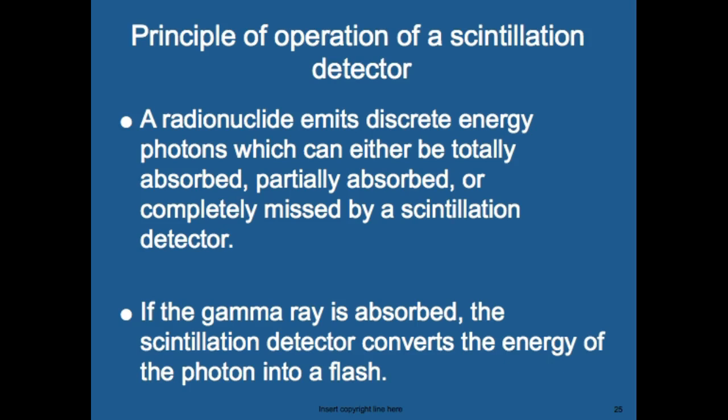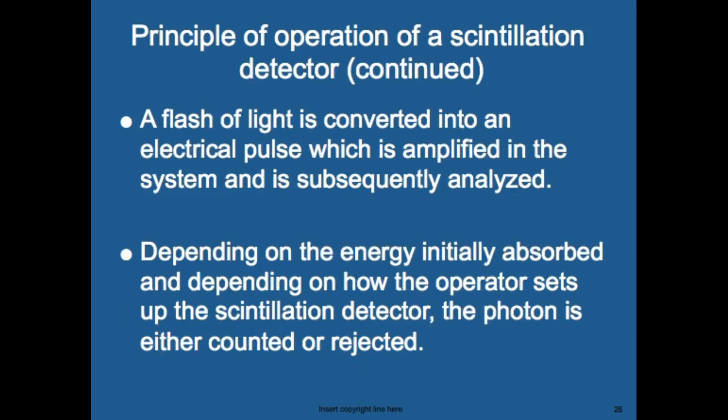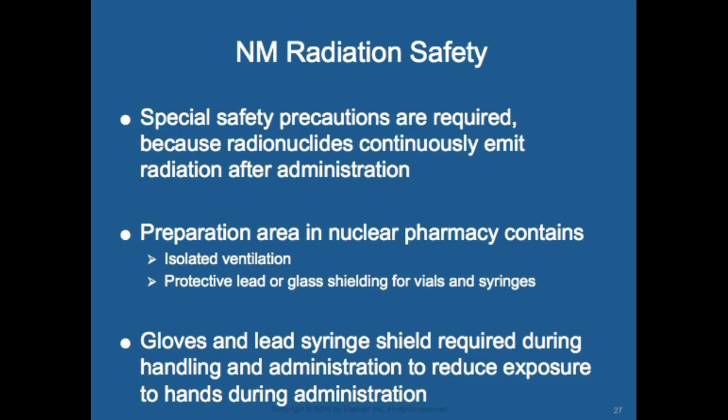The principal operation of a scintillation detector: a radionuclide emits discrete energy photons which can be totally absorbed, partially absorbed, or completely missed by the detector. If a gamma ray is absorbed, the scintillation detector converts the energy into a flash of light, which is converted into an electronic pulse and amplified. Depending on the energy of the initial absorbed photon and how the operator sets up the detector, the photon is either counted or rejected.